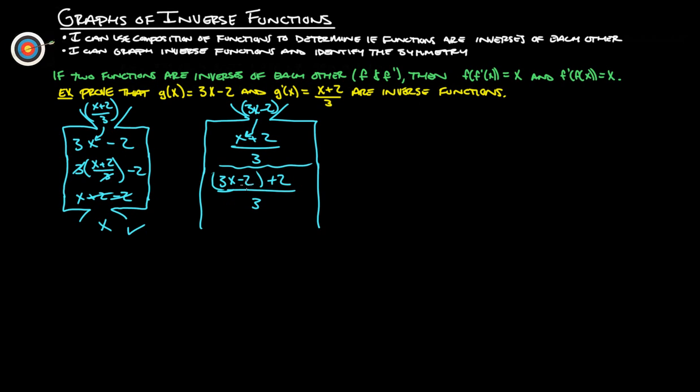So nothing to distribute here. So 3x minus 2 plus 2. This plus 2 and minus 2 cancel out and turn into 0, so then we end up with 3x over 3. The 3s go together and turn themselves into 1, and guess what? x comes back out.